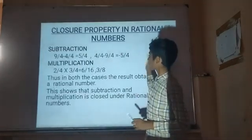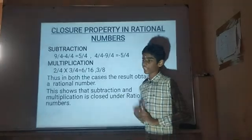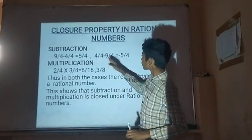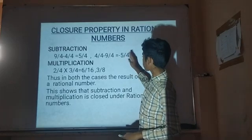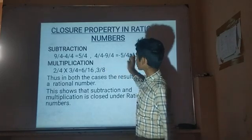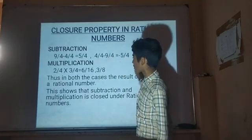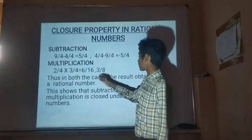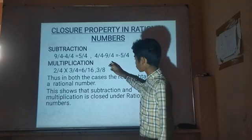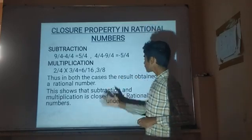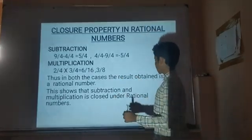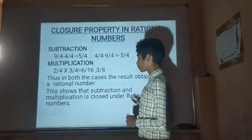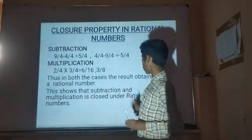Closure property — Subtraction: 9 by 4 minus 4 by 4 is equal to 5 by 4; and 4 by 4 minus 9 by 4 is equal to minus 5 by 4. In both cases the results are ratio numbers. For multiplication: 2 by 4 into 3 by 4 is equal to 6 by 16, which simplifies to 3 by 8, also a ratio number. Thus subtraction and multiplication are closed under ratio numbers.